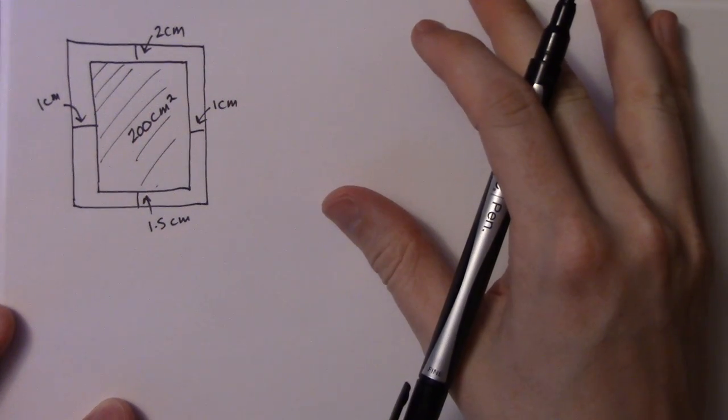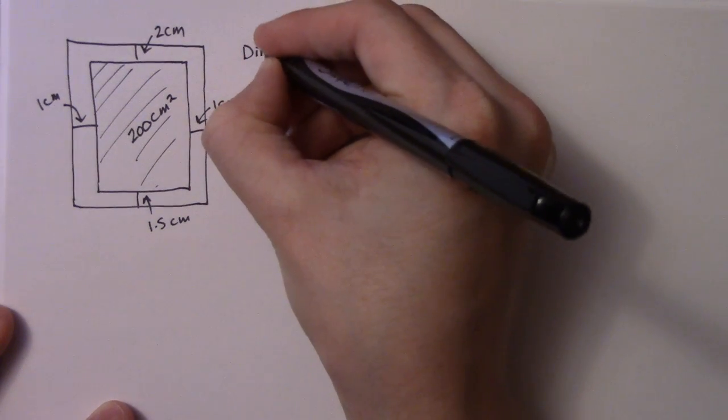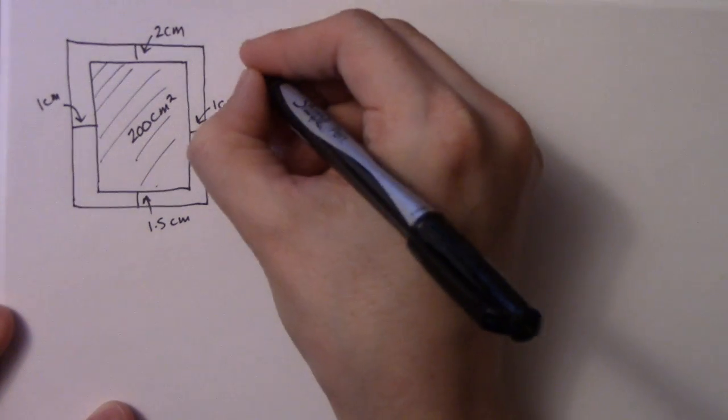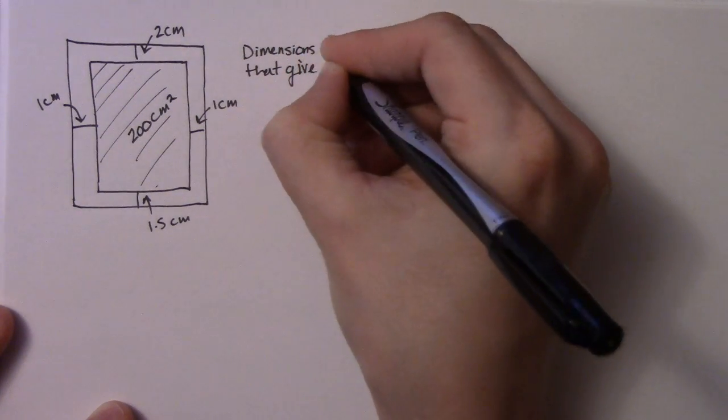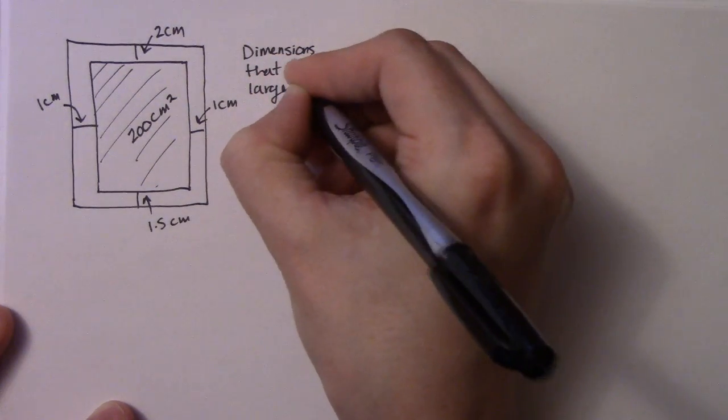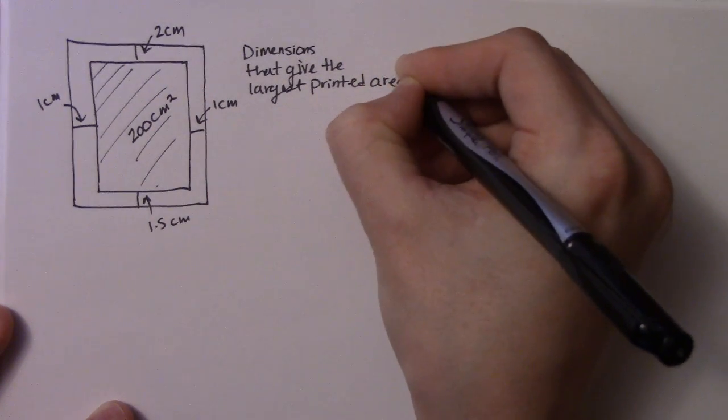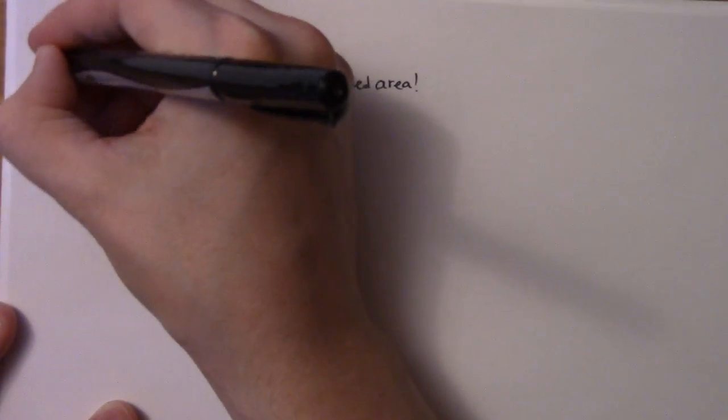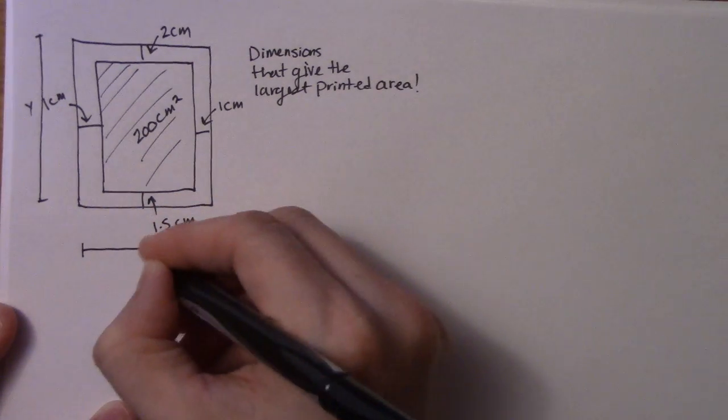So what I want to do is I want to find the dimensions of the poster, the dimensions that give the largest printed area. So in order to do that I need to get some dimensions here. So I'm going to call this whole distance here y and this entire distance here x.